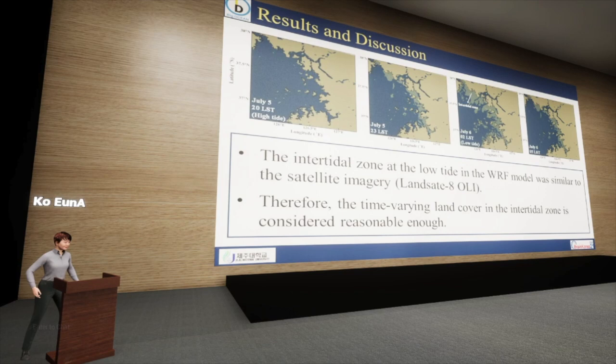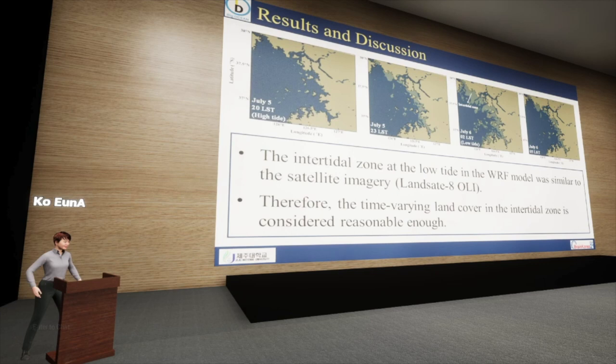Overall, a comparison of the intertidal zone applied to the WRF model with the satellite-based intertidal zone showed more closely matched spatial homogeneity during high and low tide. Therefore, we determined that the time-varying intertidal zone simulated in this study is reliably simulated.